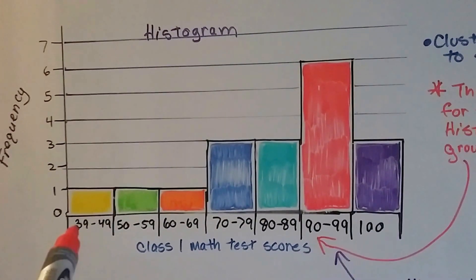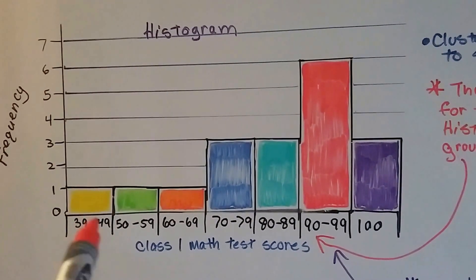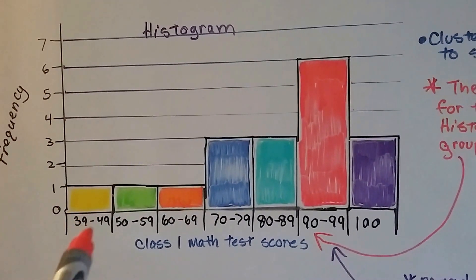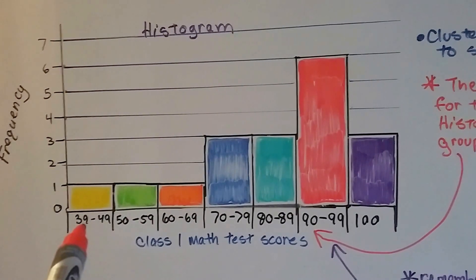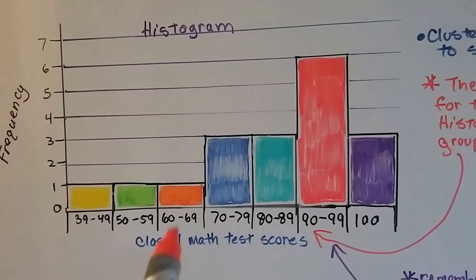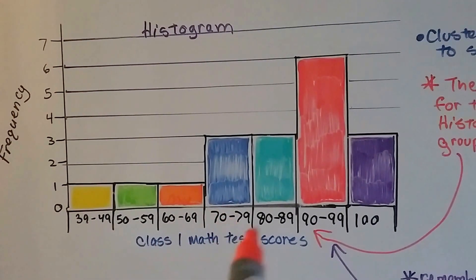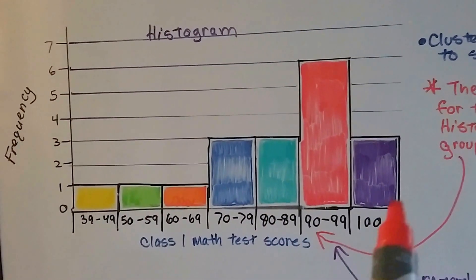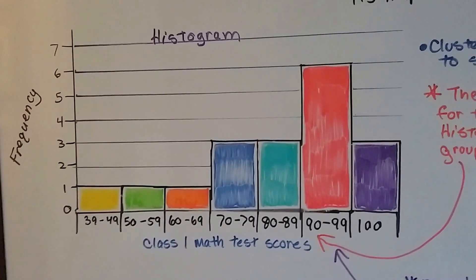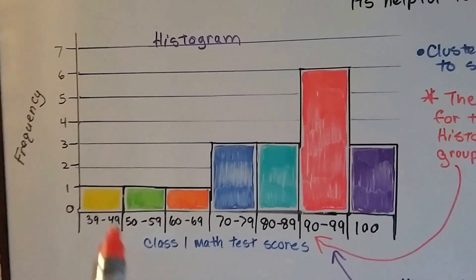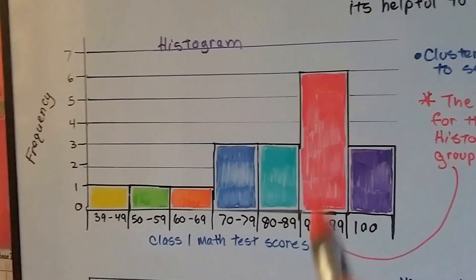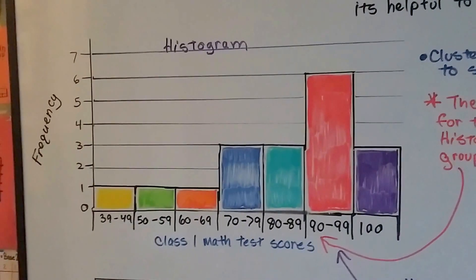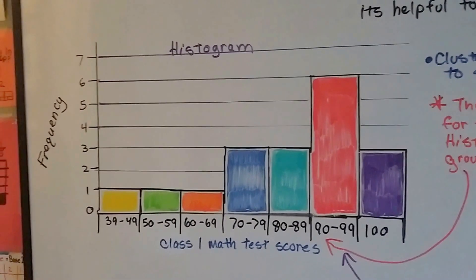The scores are grouped by people that scored in the 40s — it should say 40 there — the 50s, 60s, 70s, 80s, 90s, and people who scored 100. You can see that people who scored in the 90s were the most.